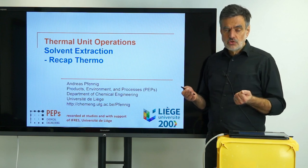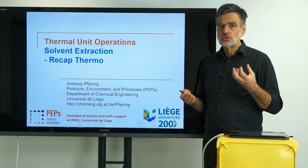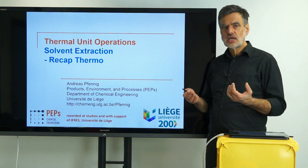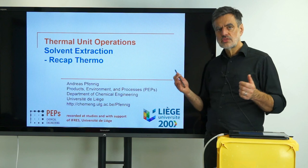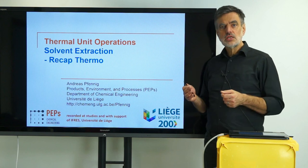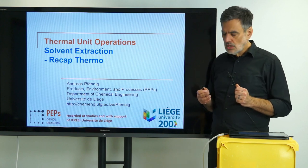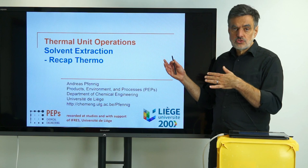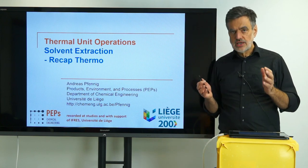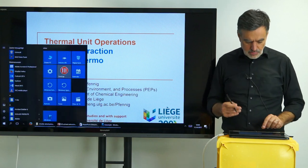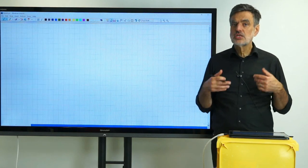If you remember from the chemical engineering thermodynamics lectures, that can be described in a so-called ternary or triangular diagram. That's exactly what we want to have a look at. I would like to do some recapitulation so that you are aware how that works, why it works, and how we can represent mixture compositions in this ternary diagram. Afterwards, we want to also collect some information about how to deal with these ternary diagrams for practical purposes.